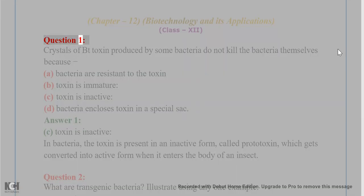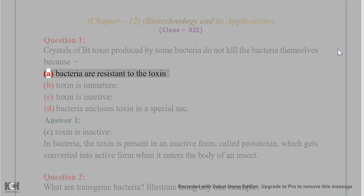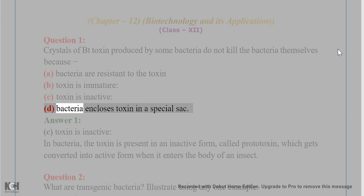Question 1. Crystals of Bt toxin produced by some bacteria do not kill the bacteria themselves because: a. Bacteria are resistant to the toxin, b. Toxin is immature, c. Toxin is inactive, d. Bacteria encloses toxin in a special sac.